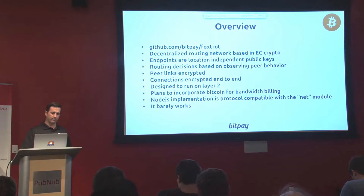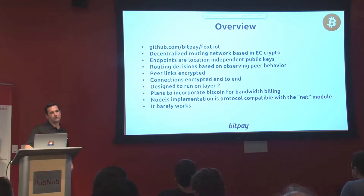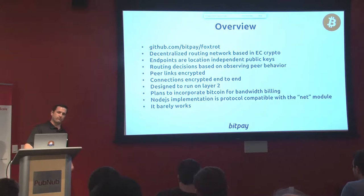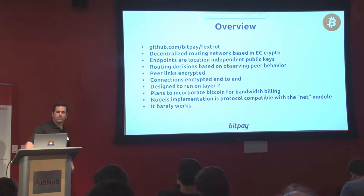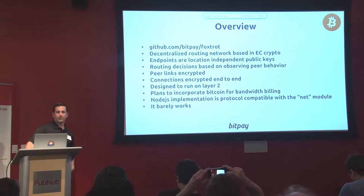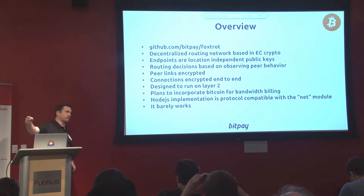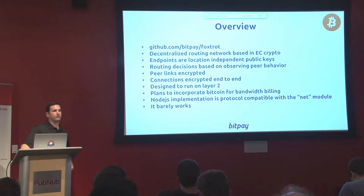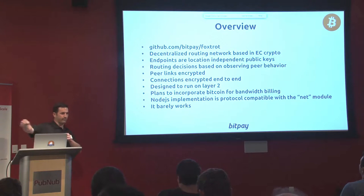So I put it up on GitHub this morning — it's at github.com/BitPay/Foxtrot. What this is is a decentralized routing network based on the same cryptography used in Bitcoin. The endpoints in this routing network are specified by public keys. The routing decisions in the nodes on this network are based on observing what your peers are doing — it's a peer-to-peer network. The peer-to-peer links are encrypted, and so are the end-to-end connections that you make over the network. It's actually two layers of encryption: one end-to-end and then one for each of the peer links.